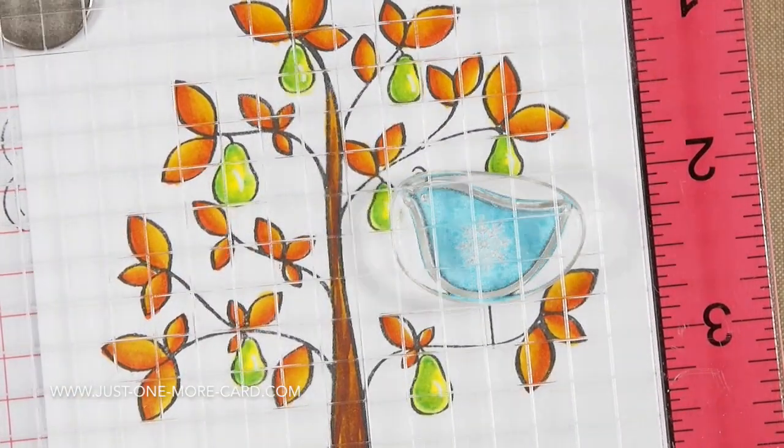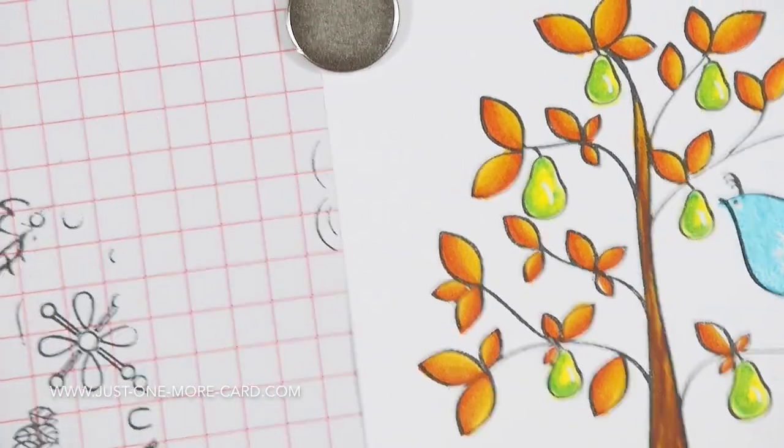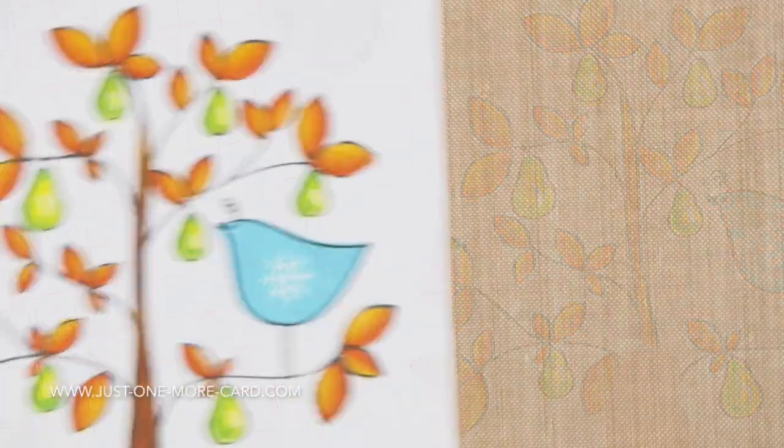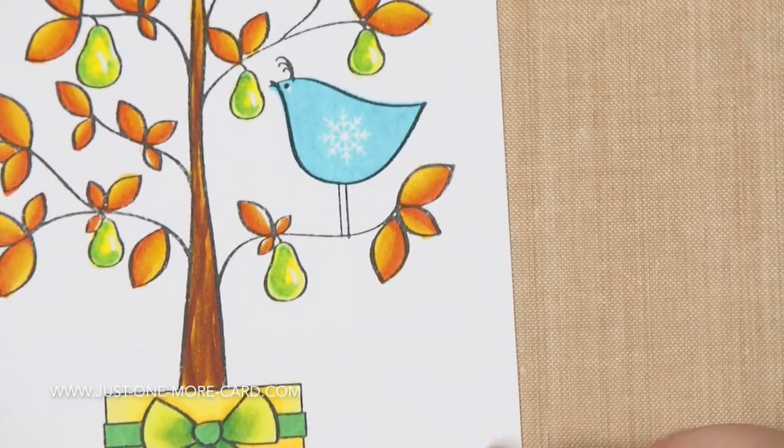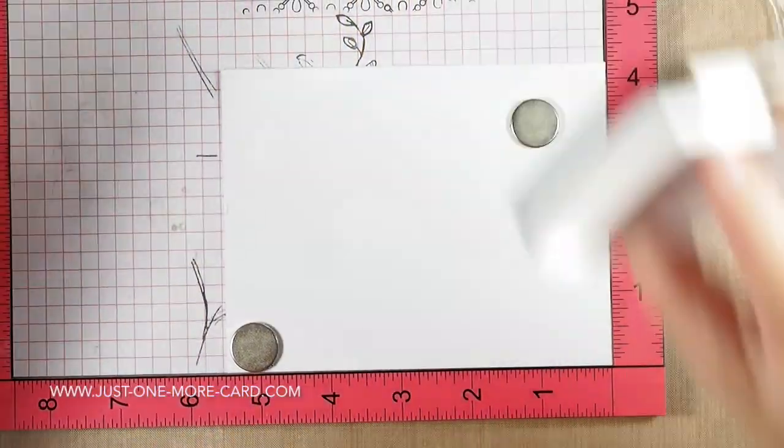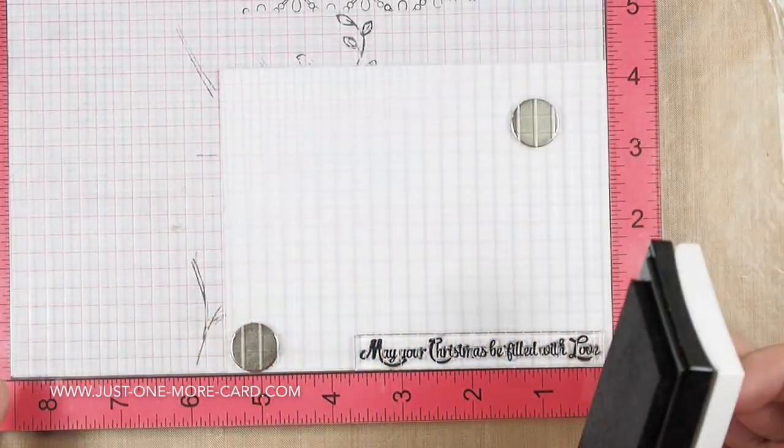Now the stamp set also includes this bird as a solid without an outline, just a solid image. I'm inking it up twice here and then I get a really nice solid impression of that bird and look at that gorgeous butterfly in there, it's just amazing. No it's not a butterfly it's a snowflake but you know what, it's as intricate as a butterfly so I wasn't that far off.